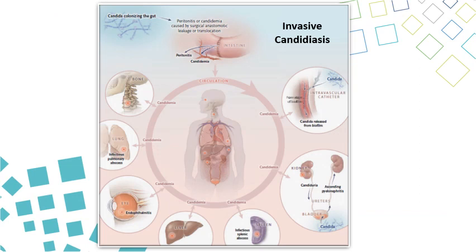This figure shows that Candida can affect almost all body organs, including the kidney, liver, eye, lung, and bone, causing multiple types of infection. The major presentation is, of course, blood infection, which is called candidemia.